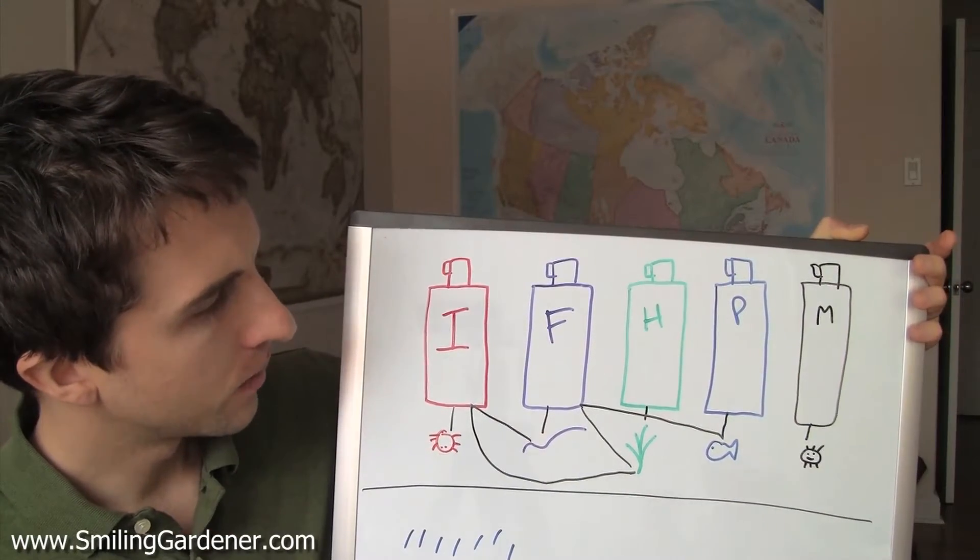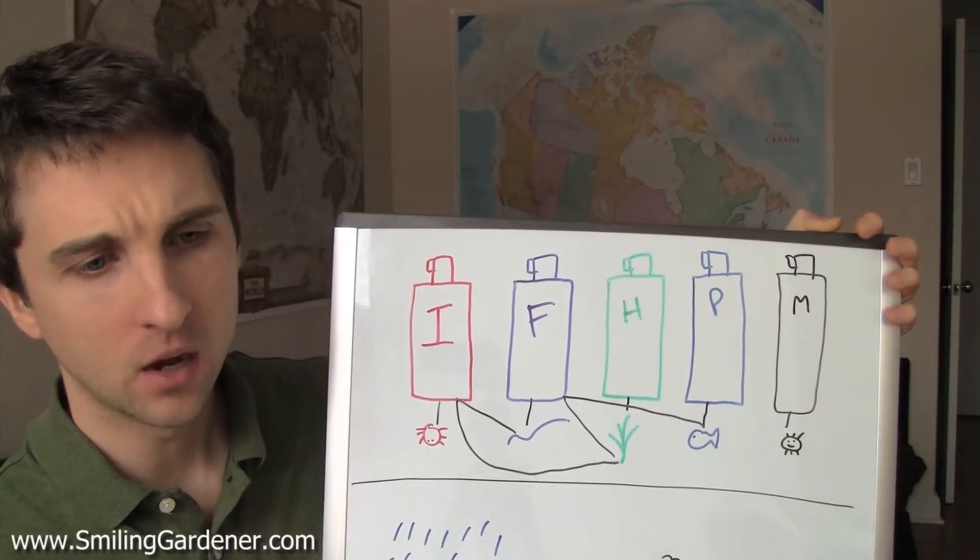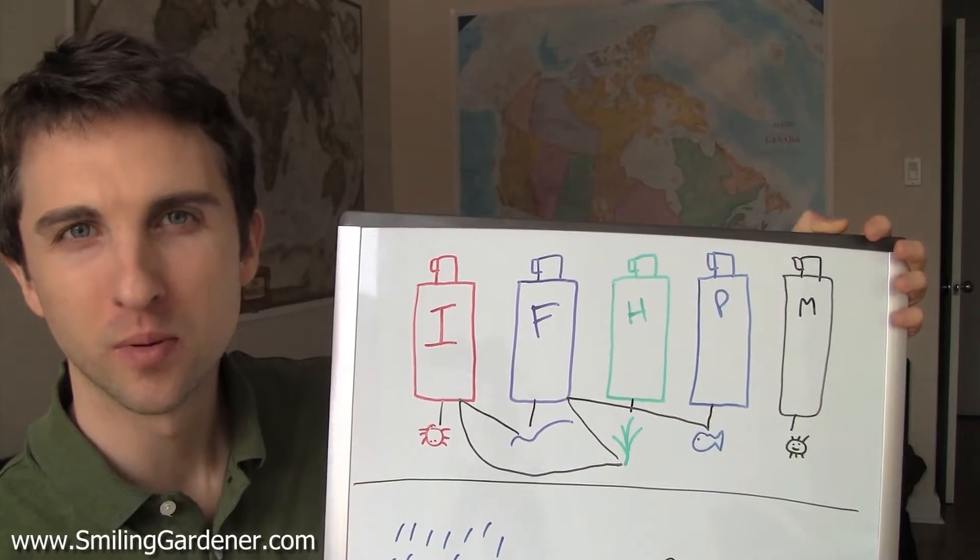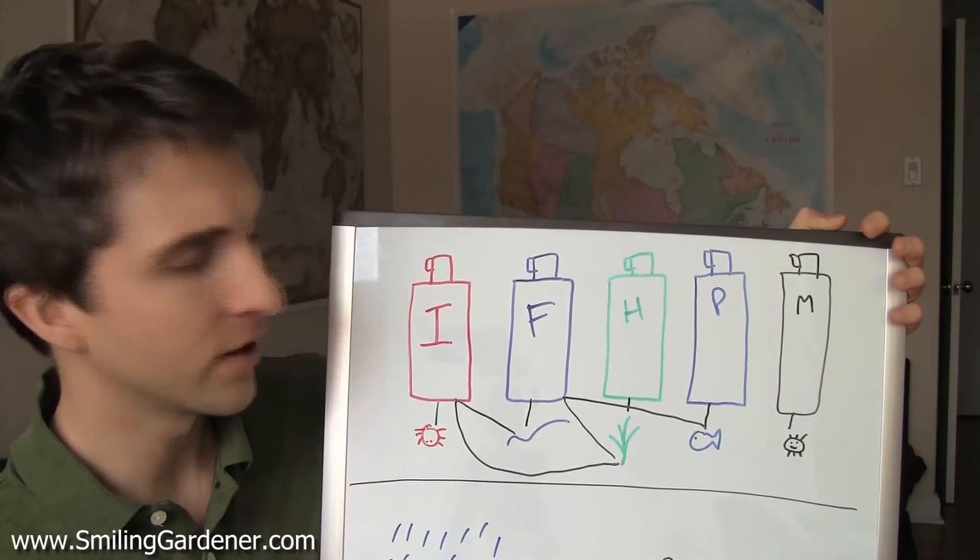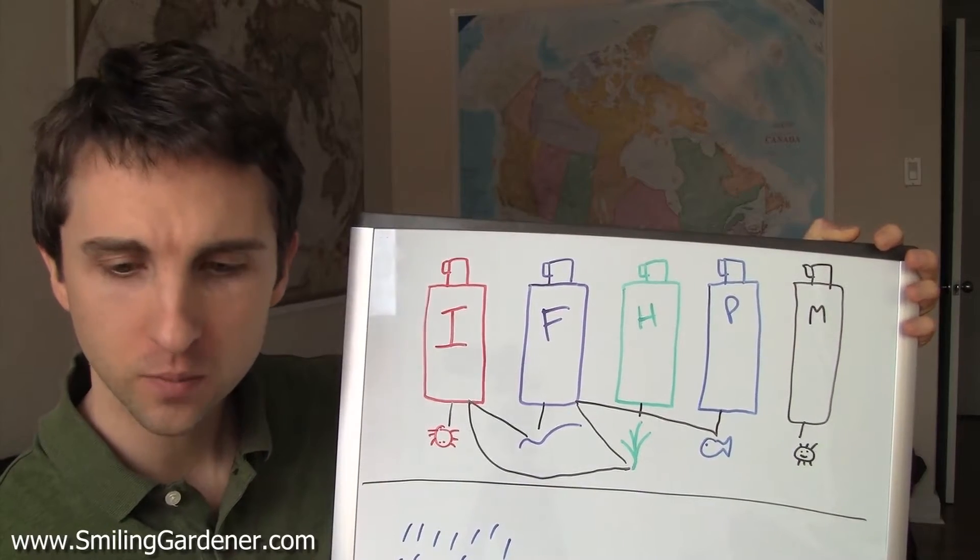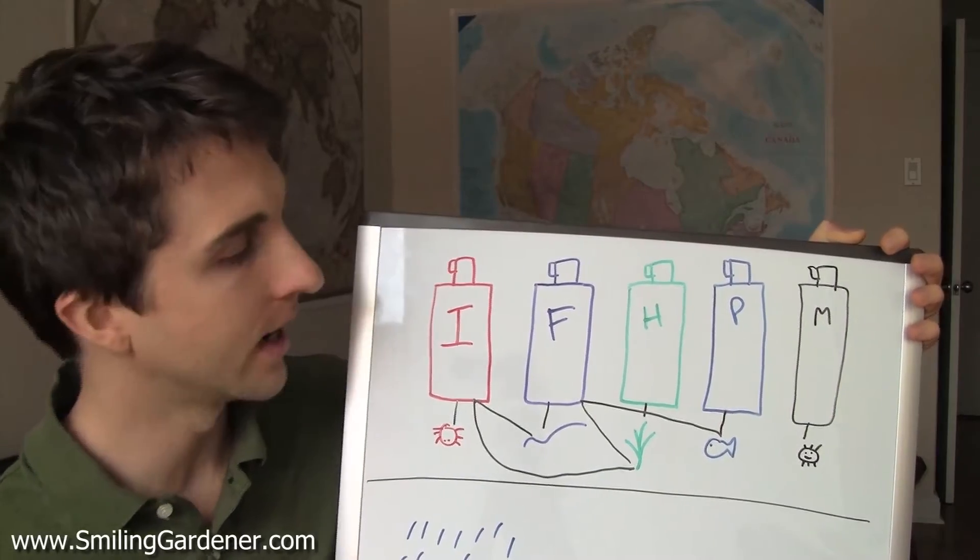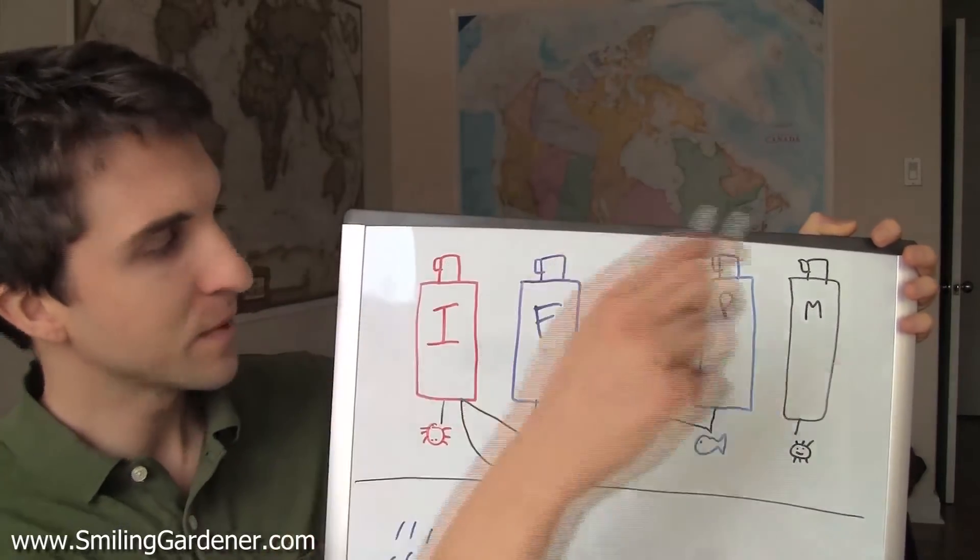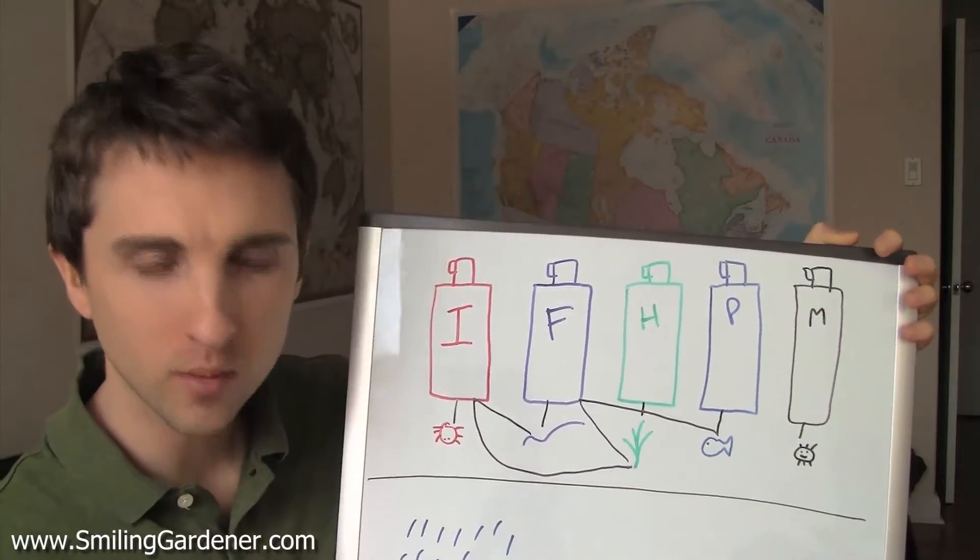So manufacturers of these pesticides talk about how the soil food web will break them down. They probably don't use that term, soil food web. But they say they'll get broken down by microorganisms. And that is probably true to a degree. Microbes are pretty resilient. There's some that are really tough and they can break down toxins and that's great. But the problem is when we keep spraying these things over many years, they just slowly kill more and more microbes.